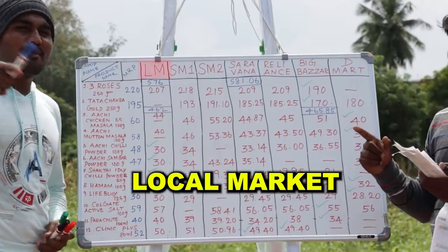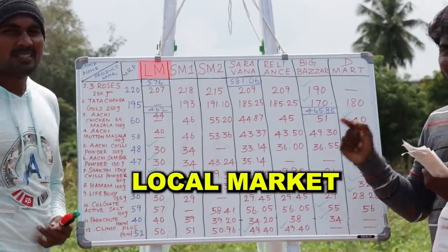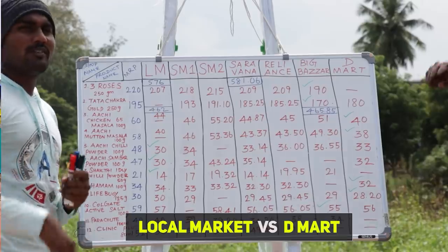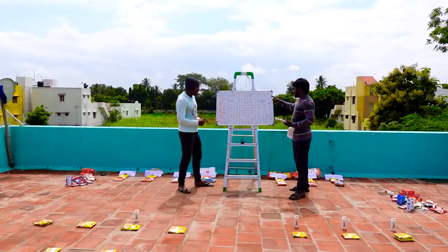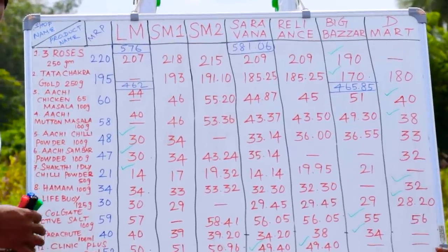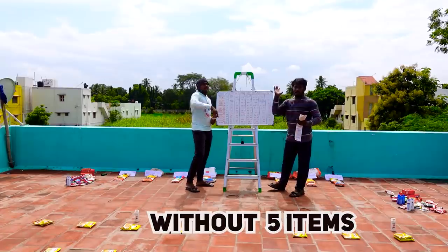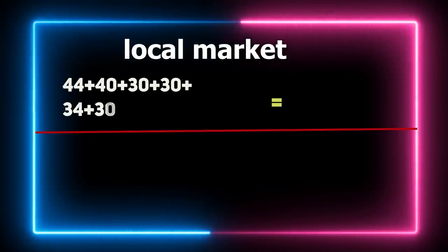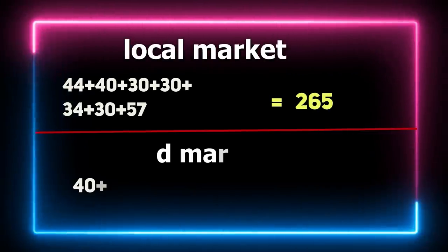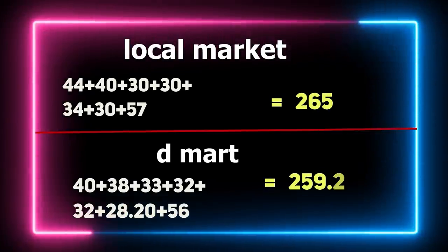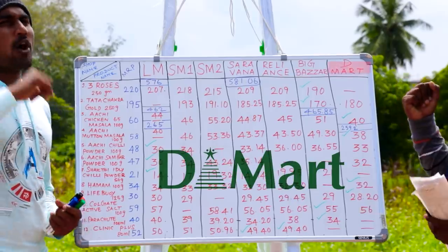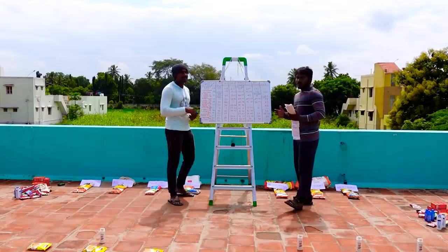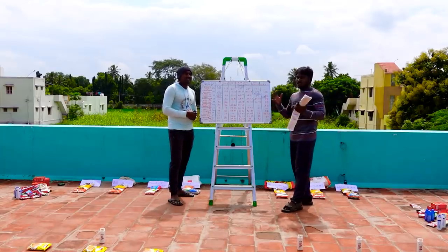Next, local market vs D-Mart. If it's less than the price, D-Mart is less than 4. Local market is less than 5. We can compare the price. Local market price is 265. D-Mart overall price is 259.20. So who is the winner? D-Mart. If it's less than 6.60, it's more than 6.60.